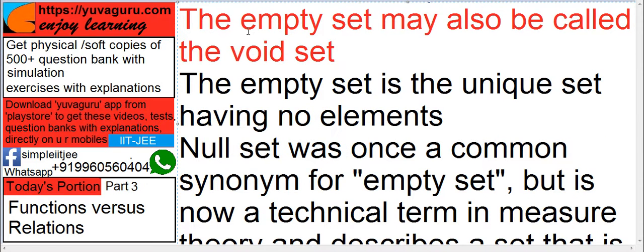The empty set may also be called the void set. Means void set, another name for void set is empty set. Now, what is empty set then? The empty set is a unique set having no elements. Means it has nothing. It's just blank. Only no elements in that set.